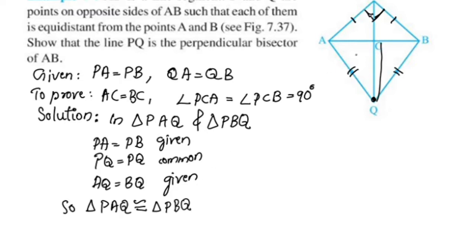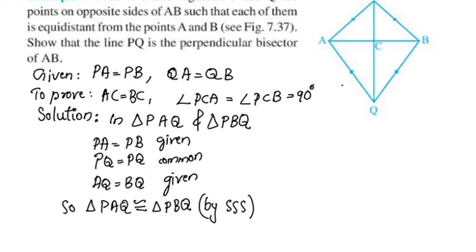What kind of congruence do we have? We have three sides: PA=PB, QA=QB, and PQ is the common side. So by the SSS congruence rule, triangle PAQ is congruent to triangle PBQ. The corresponding angles are equal, so angle APQ is equal to angle BPQ by CPCT.